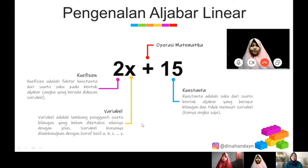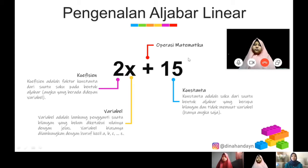Selanjutnya ada variabel, yaitu lambang pengganti suatu bilangan yang belum diketahui nilainya dengan jelas. Variabel biasanya dilambangkan dengan huruf kecil, seperti A, B, C, ataupun sampai dengan Z. Dari persamaan ini yang dinamakan variabel adalah X. Kemudian tanda tambah sebagai bentuk operasi dari matematika. Yang terakhir ada konstanta, yaitu suku dari suatu bentuk aljabar yang berupa bilangan dan tidak memuat variabel — hanya angka saja. Dalam persamaan ini yang dinamakan konstanta adalah 15.